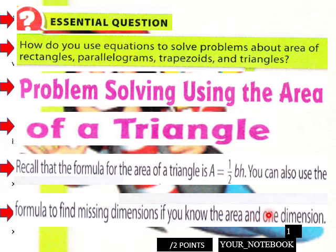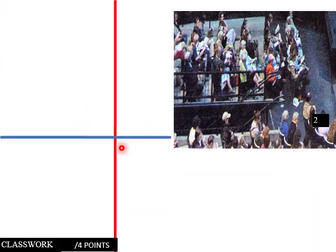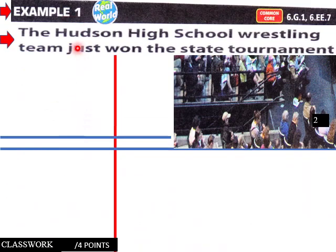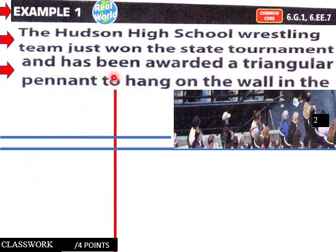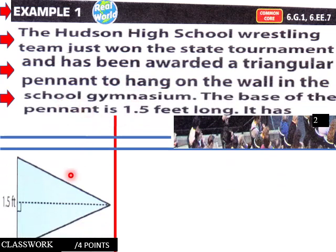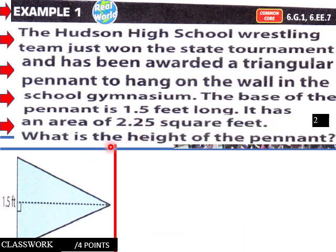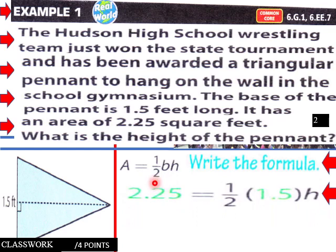Example one: The Hudson High School wrestling team just won the state tournament and has been awarded a triangular pennant to hang on the wall in the school gymnasium. The base of the pennant is 1.5 feet long and it has an area of 2.25 square feet. What is the height of the pennant? We know area equals one-half base times height — the formula for the area of a triangle.